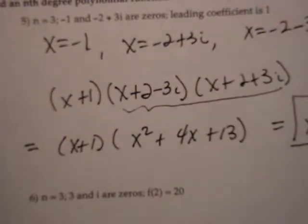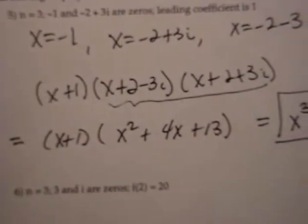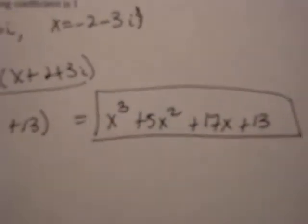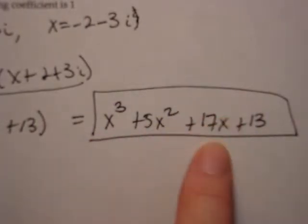Okay, so I did my multiplication. First, multiply the two factors with complex numbers and you should get x squared plus 4x plus 13. Then you multiply the x plus 1 times that quadratic and you should get x to the third plus 5x squared plus 17x plus 13. That's the answer to number 5.